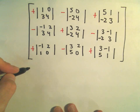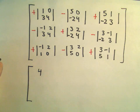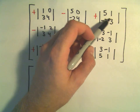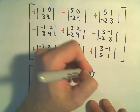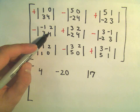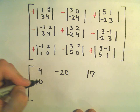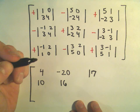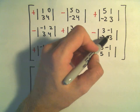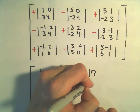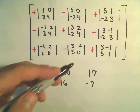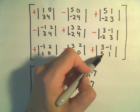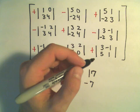Computing the cofactors: 4 minus 0 gives 4. 20 minus 0 with the negative sign gives negative 20. 15 minus negative 2 gives 17. Negative 4 minus 6 is negative 10, but the extra negative makes it positive 10. 12 minus negative 4 is 12 plus 4, which is 16. 9 minus 2 is 7, but with the negative sign gives negative 7. 0 minus 2 is negative 2. 0 minus 10 is negative 10, but the extra negative makes it positive 10. And 3 minus negative 5 is 3 plus 5, which is 8.